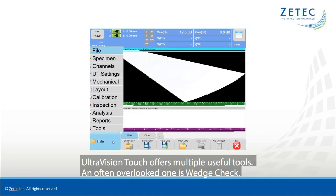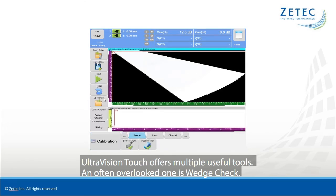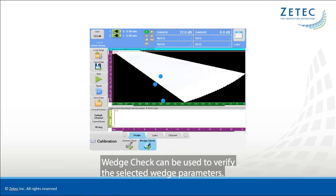UltraVision Touch offers multiple useful tools, an often overlooked one is Wedge Check. Wedge Check can be used to verify the selected wedge parameters.